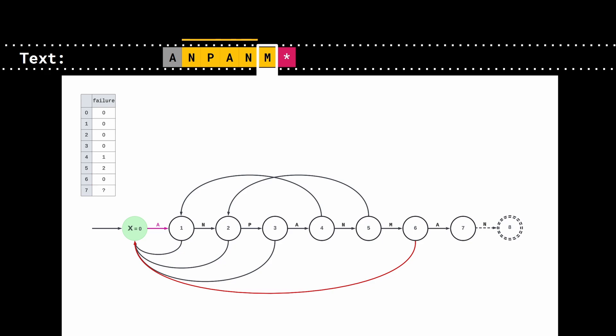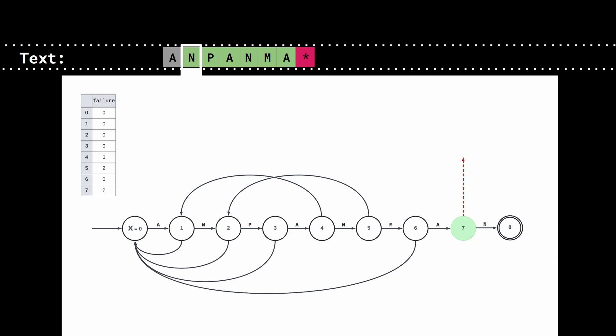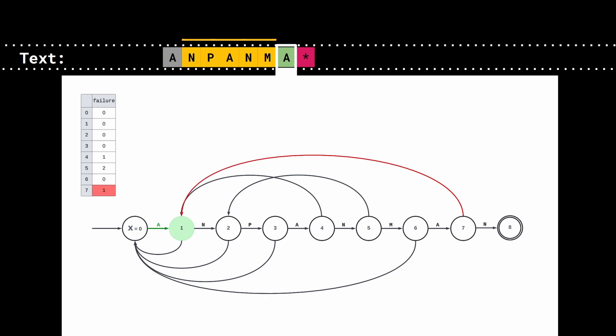Let's keep going. In state 7, if we read an N, we go to the final state 8. Otherwise, we follow the failure link, which we can find by simulating the automaton for the string N, P, A, N, M, A. But we know that after reading N, P, A, N, M, we end up in state 0. So we just need to check what happens when we read an A in state 0 — this leads us to state 1. So the failure link of state 7 goes to 1, and we are done.